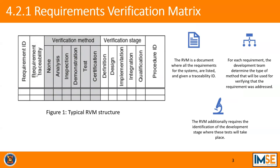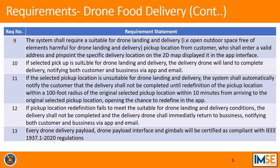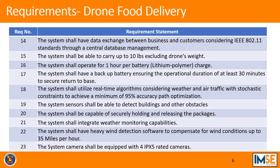In the following slides, I will show you the system requirements for our project, drone food delivery. For each requirement, it is required to determine the types of methods that will be used for verifying the requirements. There are various methods to verify the requirements, like analysis, inspection, demonstration, test, and certification. Here is the list of requirements for our project — a total of 23 requirements obtained after instructor and peer reviews.